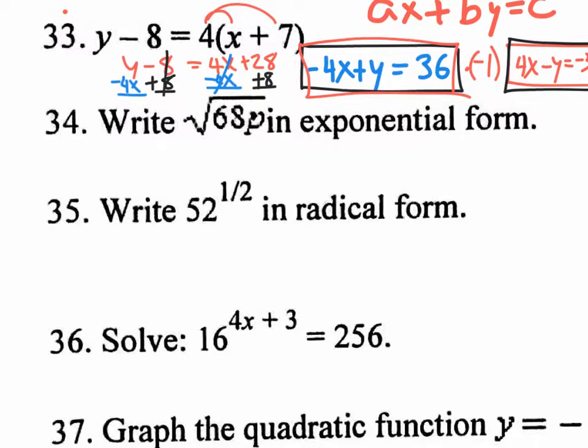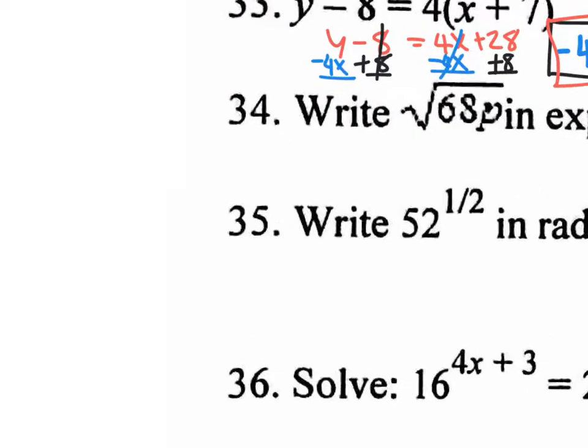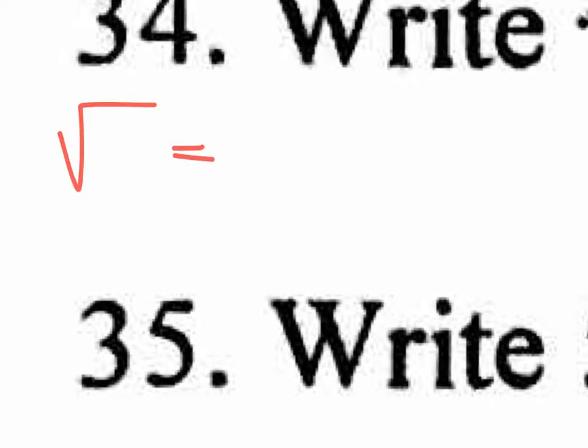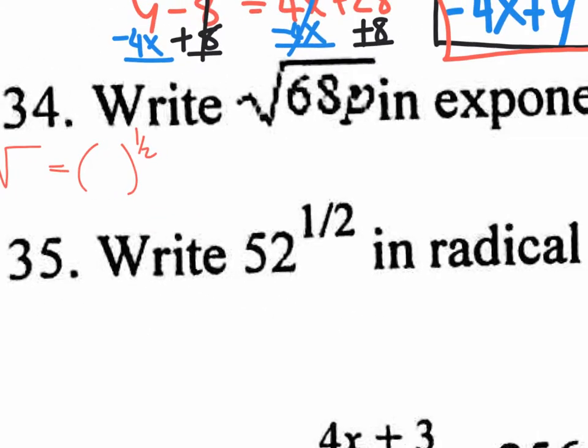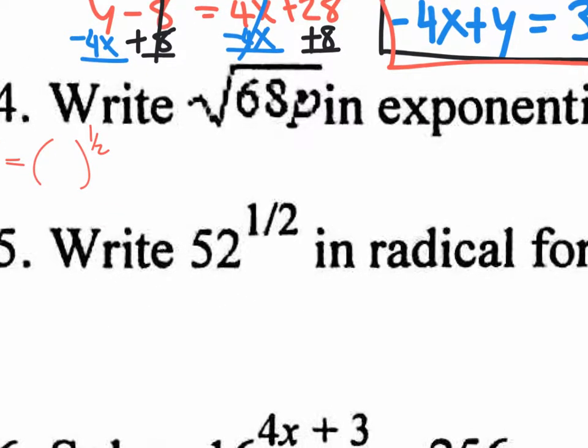Number 34, write in exponential form. That sounds confusing, but the fact is that a square root can be rewritten as what power? A square root can be rewritten as the power of 1 half. If there was a third root, that would be the power of 1 third. Fourth root, power of 1 fourth. Fifth root, power of 1 fifth. So it's that simple. I mean, it's like giving you free points on the test. If you have 68p right here, and they want you to rewrite it but with exponents instead of the radical, that would simply be 68p on the inside to the power of 1 half. And that's it. You see? It's easy.